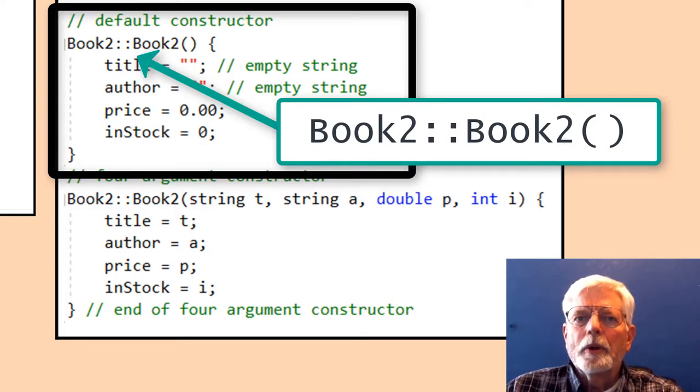We need to put Book2 colon colon in front of any constructor or method whose code is not actually in the file where class Book2 is actually defined.